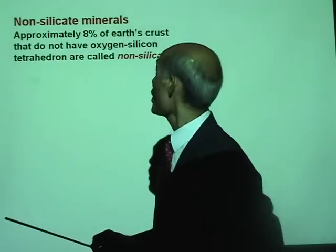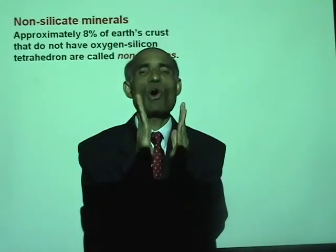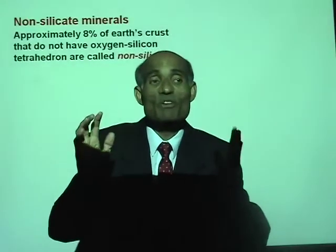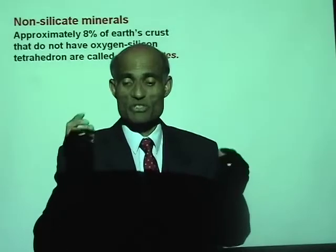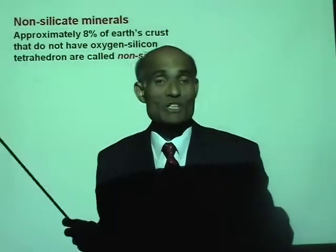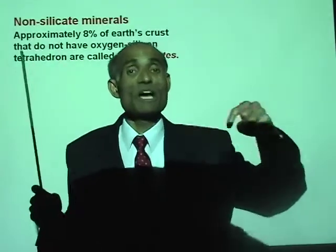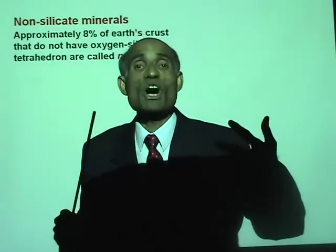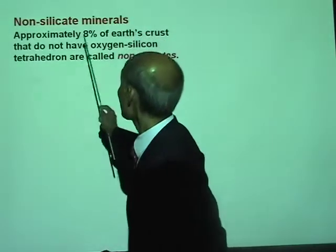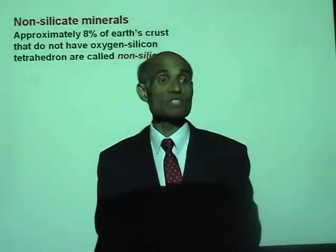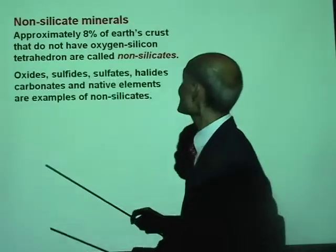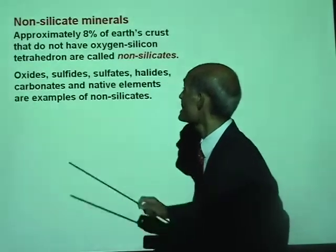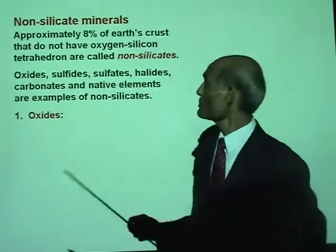Let's now talk about non-silicate minerals — minerals that do not contain silicon and oxygen. Approximately 8% of the Earth's crust does not have oxygen-silicon tetrahedra, and these are called non-silicates. Examples of non-silicate mineral groups include oxides, sulfides, sulfates, halides, carbonates, and native elements.